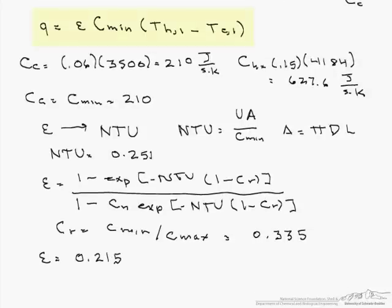From that we can find our Q using our original equation: effectiveness times C_min times T_H,i minus T_C,i. So Q equals 0.215 times 210 times 65 degrees minus 20 degrees, which equals 2,030 watts.